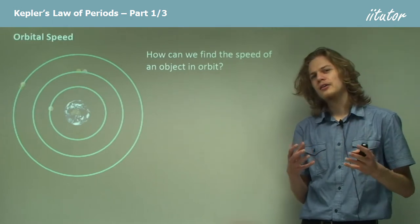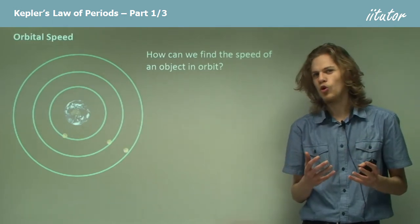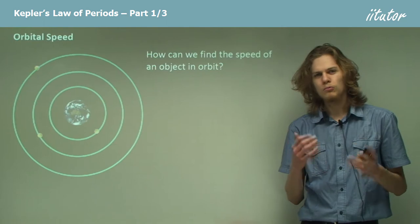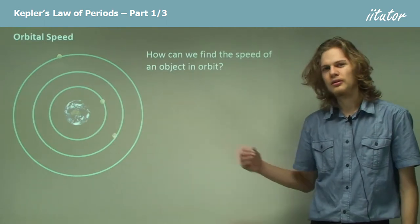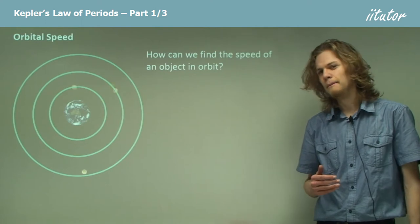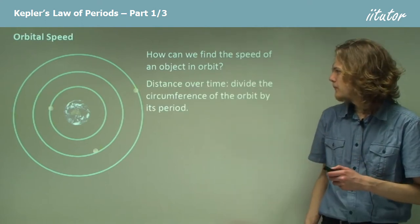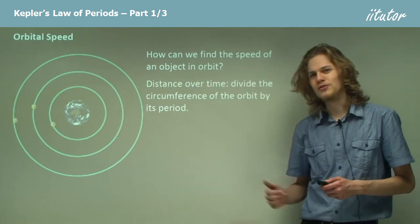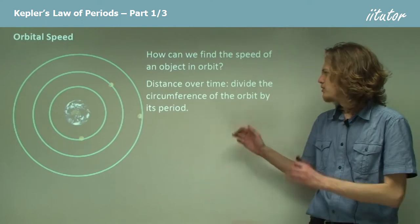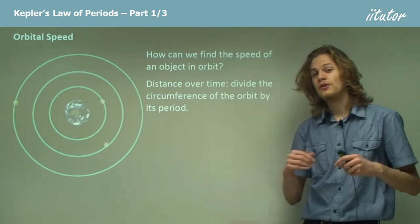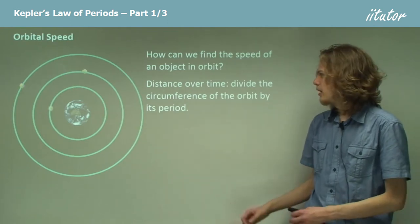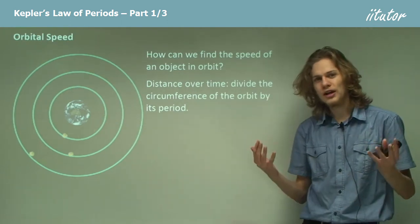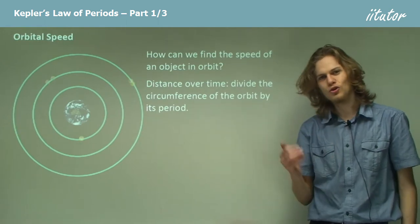Now how is it possible to find the speed of an object in orbit? Well, we should be able to figure it out if we know the radius of the orbit and the time that it takes. So it's just distance over time. To find the distance we need to find the circumference of a circular orbit, and the period is simply how long it takes for the object to move around in its orbit.